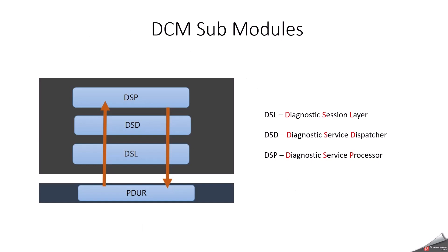DCM has three sub-modules: DSP, DSD, and DSL. DSL is the lower layer, since the PDU router will reroute the message to DSL first. From there it goes to DSD, then to DSP. DSP communicates to the software component via RTE. DSL stands for Diagnostic Session Layer, DSD stands for Diagnostic Service Dispatcher, and DSP stands for Diagnostic Service Processor.